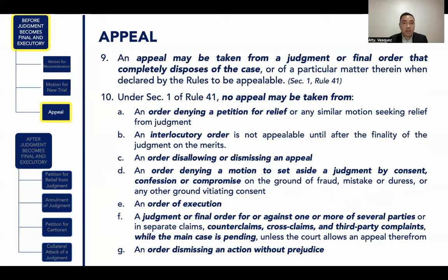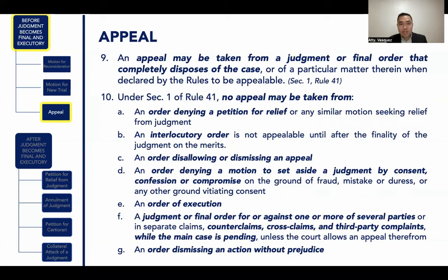Under Section 1, Rule 41, no appeal may be taken from: an order denying a petition for relief from judgment; an interlocutory order; an order disallowing or dismissing an appeal; an order denying a motion to set aside judgment by consent, confession, or compromise on the ground of fraud, mistake, duress, or any other ground vitiating consent; an order of execution; a judgment or final order with respect to counterclaims, crossclaims, and third-party complaints while the main case is pending; and an order dismissing an action without prejudice.